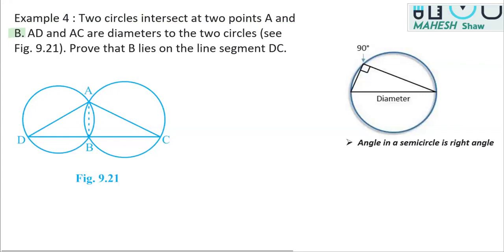We are going to use the concept that an angle in a semicircle is a right angle. Whenever an angle is subtended, as you can see this is a semicircle, it is subtending an angle. So this angle so subtended is 90 degrees.